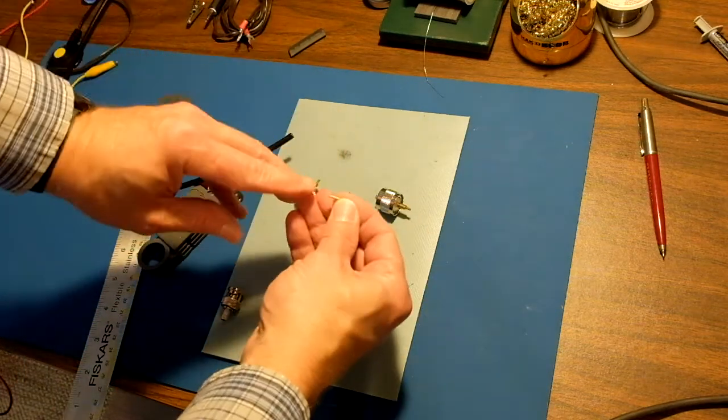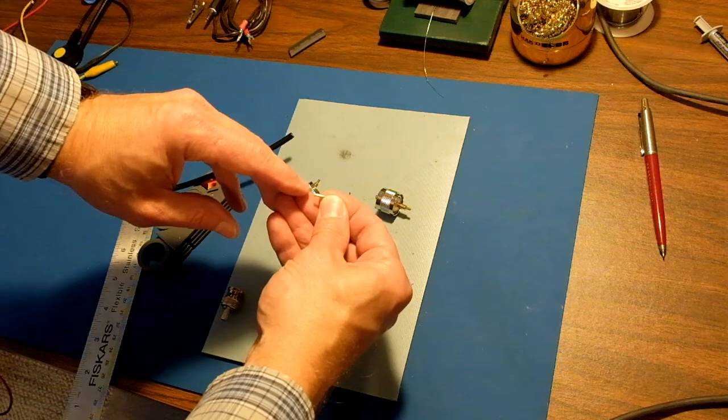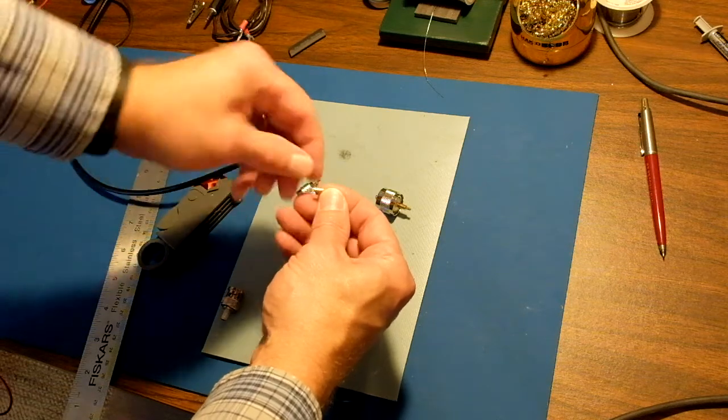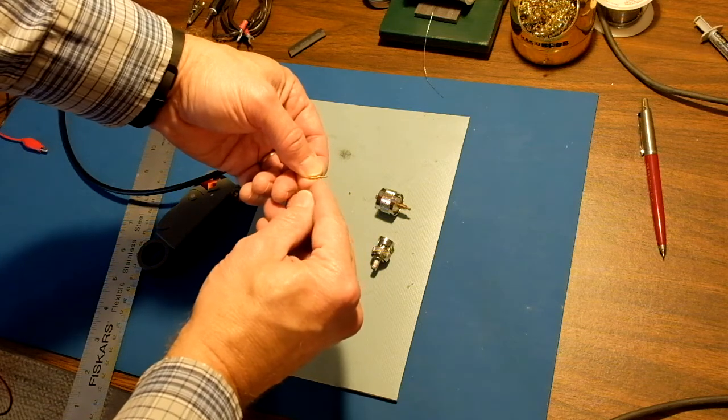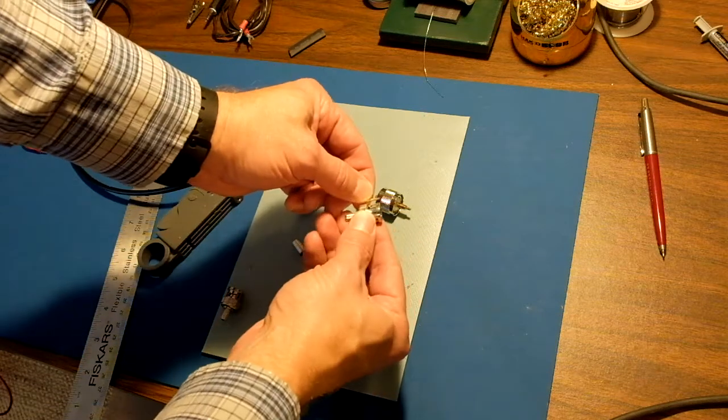So what you're doing is you're having the wire, the inner center conductor, go to the end of this, and then this part's going to come the rest of the way up. So when you're doing your measurement...